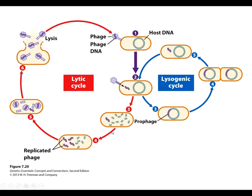Once that happens, the phage chromosome is replicated, phage protein components are made inside the cell, and then — potentially millions of phage progeny are assembled. The cell then lyses to release each of these new progeny phage, and each progeny phage can go out and infect a new host cell, spreading infection very quickly through a culture. This is called the lytic cycle because it ends in the lysis of the host cell.